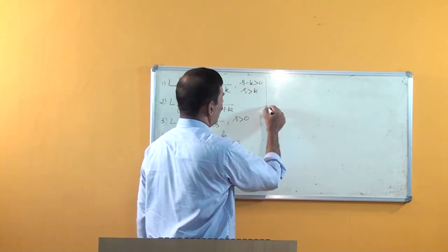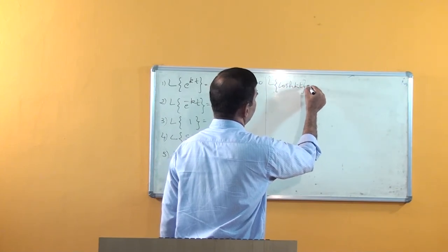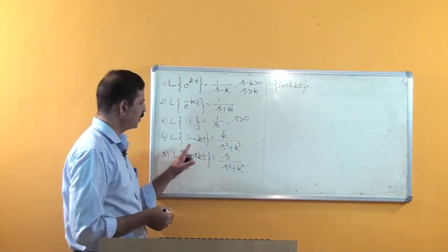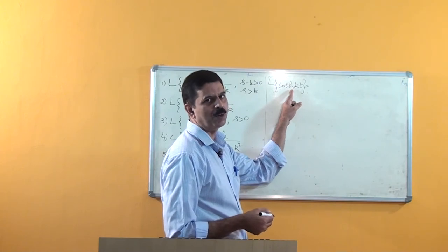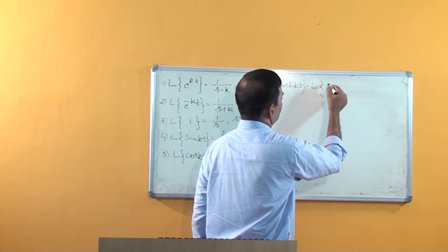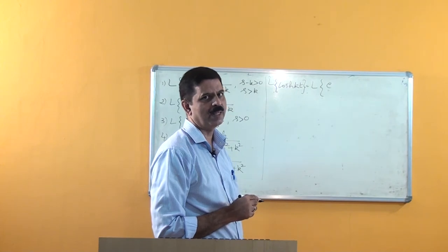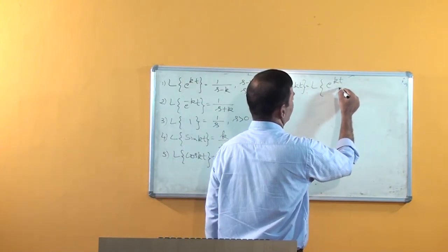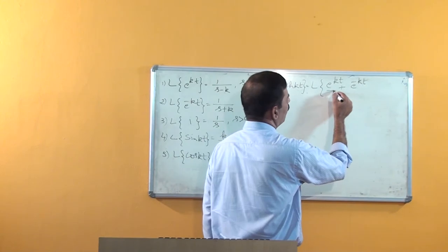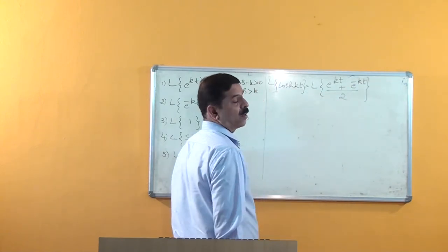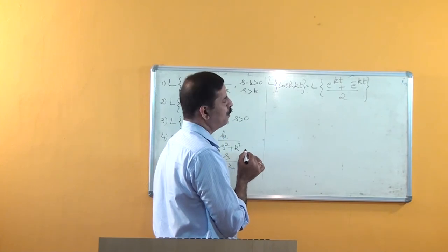Now one more function — the hyperbolic function. Laplace of cosh(kt): here I will show you the cosine hyperbolic case, as I showed the sine case earlier. How to find Laplace of cosh(kt): that is equal to Laplace of (e^(kt) + e^(-kt))/2, using the definition of the hyperbolic function from your pre-university course.